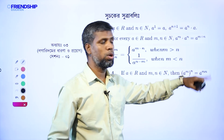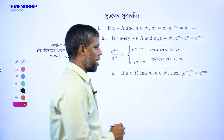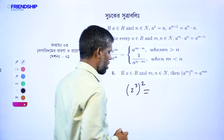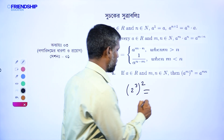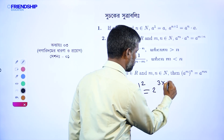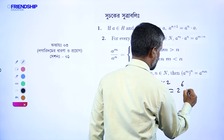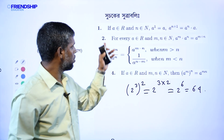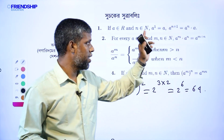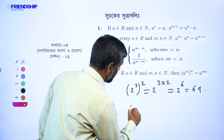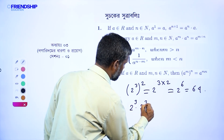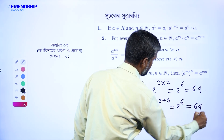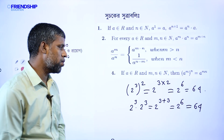According to this formula, 2 to the power 3 into 2 is equal to 2 to the power 6 is equal to 64. We have the formula: a to the power m into a to the power n equals a to the power m plus n. So, 2 to the power 3 into 2 to the power 3 is equal to 2 to the power 3 plus 3, which is 2 to the power 6, equal to 64.